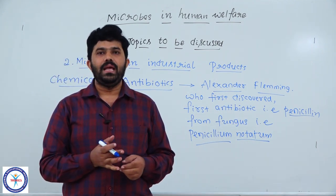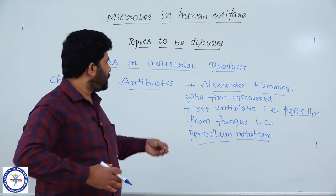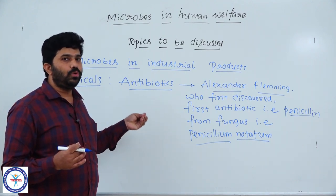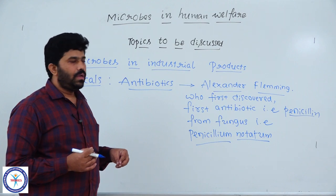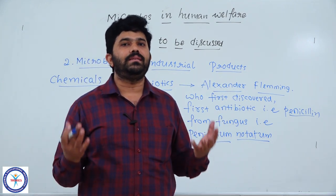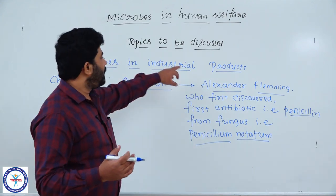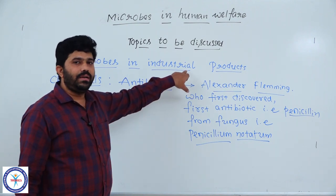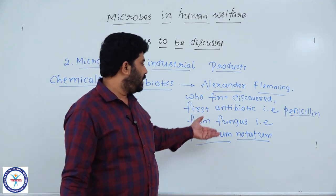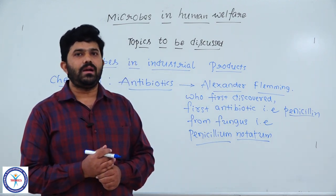These antibiotics were first discovered by Alexander Fleming. The requirement of antibiotics is needed at large scale, so that much amount of antibiotic production is done by industries. That is why antibiotics come under industrial products — for the production of antibiotics, we use many microorganisms.